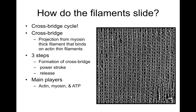How do the filaments slide? There's the cross-bridge cycle. Cross bridges are the projections from the myosin thick filaments that bind to the actin on the thin filaments, and there are three steps: the formation of the cross bridge, the power stroke, and the release. The main players are actin, myosin, and ATP. Muscle movement is expensive and it costs ATP.